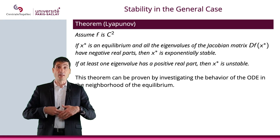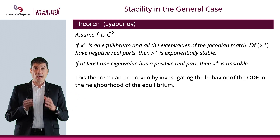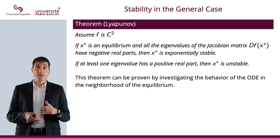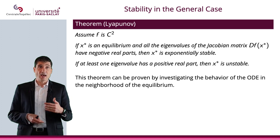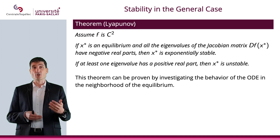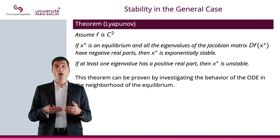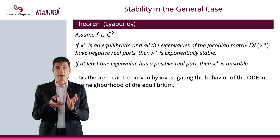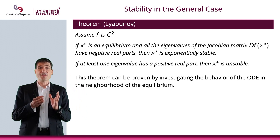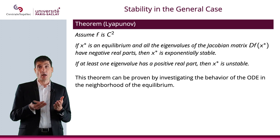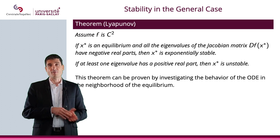This leads to the Lyapunov theorem, which assumes f to be C2. It states: if x star is an equilibrium and all eigenvalues of the Jacobian matrix df of x star have negative real parts, then x star is exponentially stable. If at least one eigenvalue has a positive real part, then x star is unstable. Stability is driven by the eigenvalues of the Jacobian matrix, provided all real parts are nonzero.